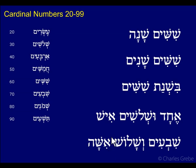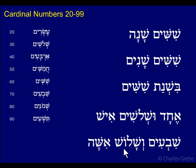Another example: Shveim Vshalosh Ishah — Ishah means 'woman,' again singular. Here we have the other order: ten first — Shveim, which is 70 — then the unit Shalosh. Note that Shalosh is masculine (no ending, not Shaloshah or Shaloshet), and Ishah is feminine. So there is a gender flip here because we're dealing with a unit between three and nine.